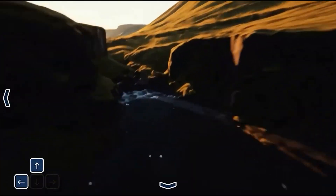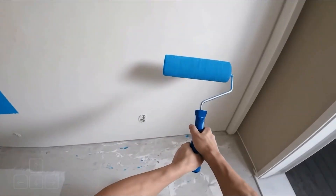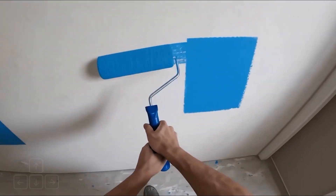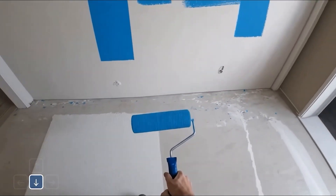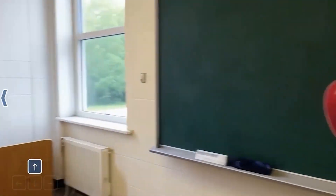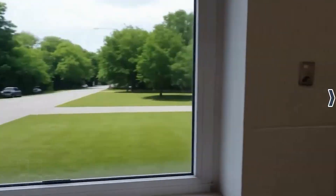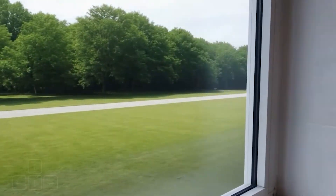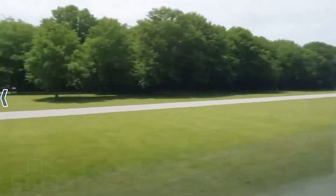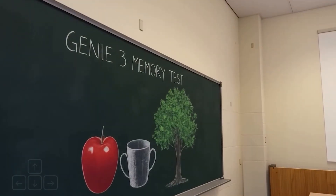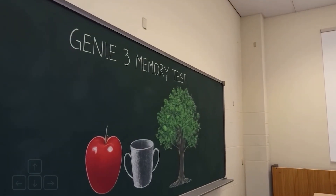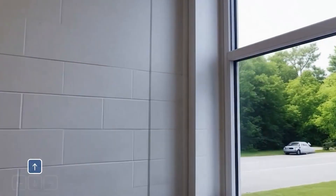We also see this in the demo of an agent painting a house — the new paint color stays on the wall, demonstrating a persistent state change. And in a direct memory test, a detailed chalk drawing on a classroom blackboard remains unchanged after the camera looks away and comes back again. This consistency shifts Genie from a generative AI to a truly simulative AI that has a sense of history.